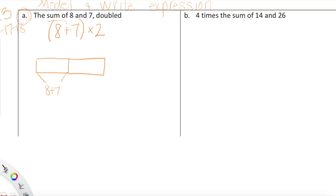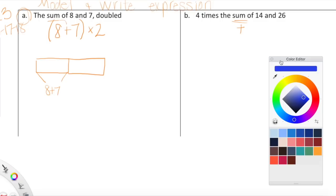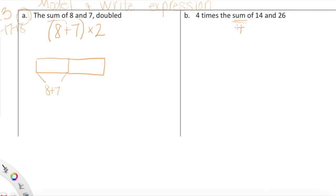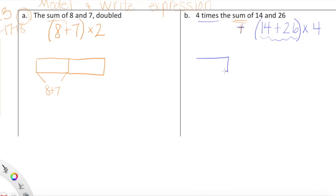Here we see that keyword again — sum. The sum is the answer to an addition problem, so I'm looking for the sum of 14 and 26, which means we're adding. I'm going to protect the sum of 14 and 26 with parentheses because we're looking for four times that. When we evaluate this, we'll find the sum first and then multiply the sum by four.